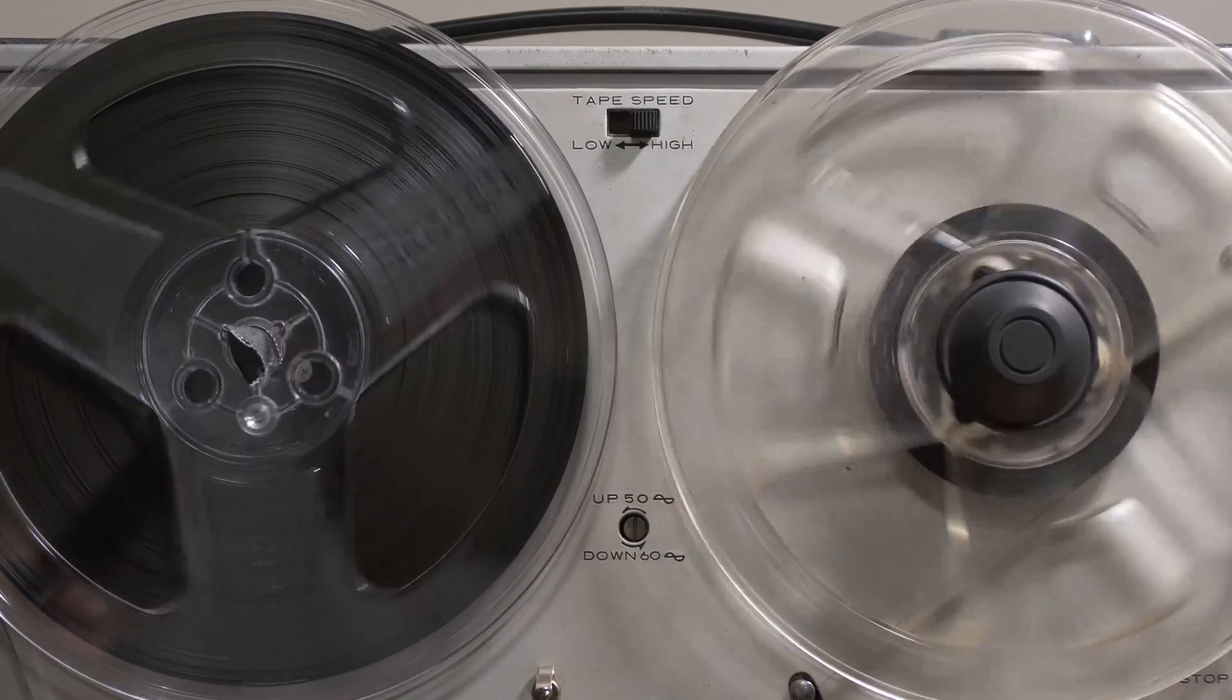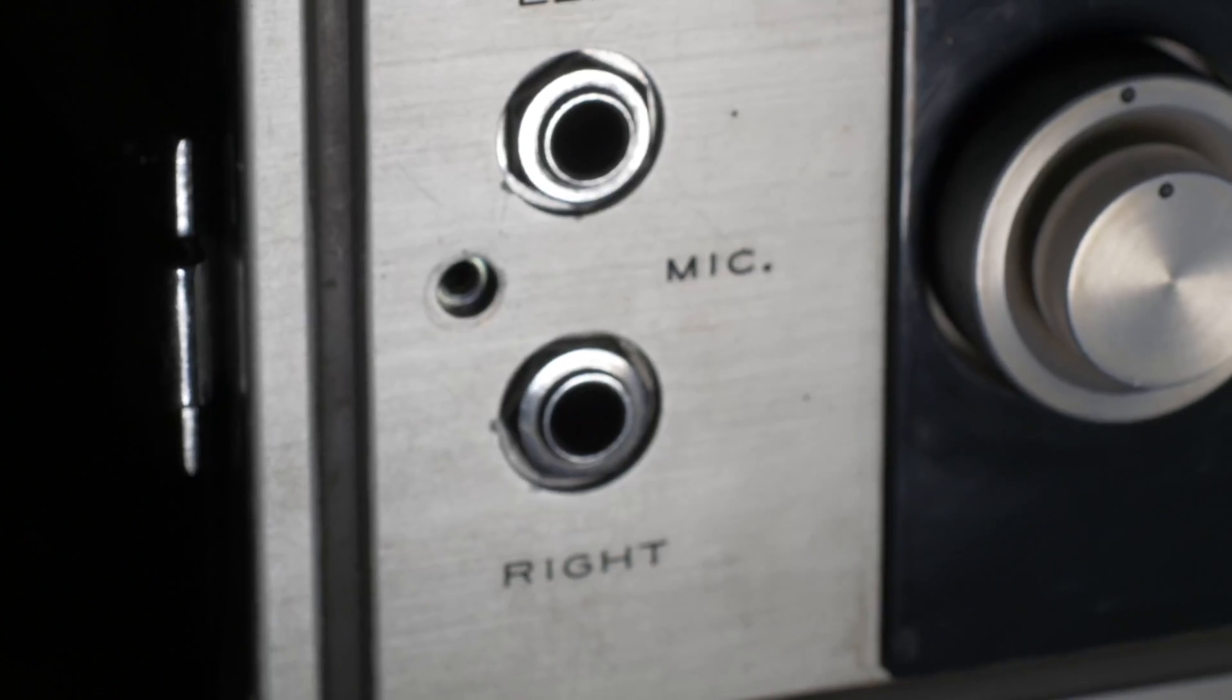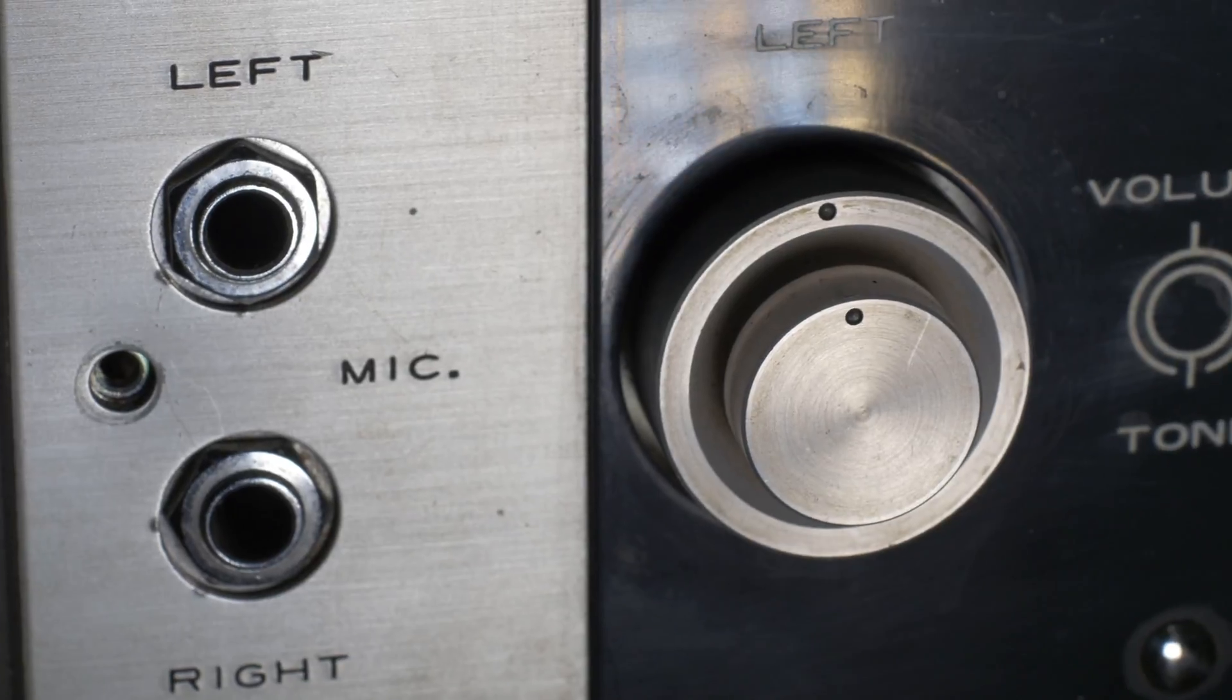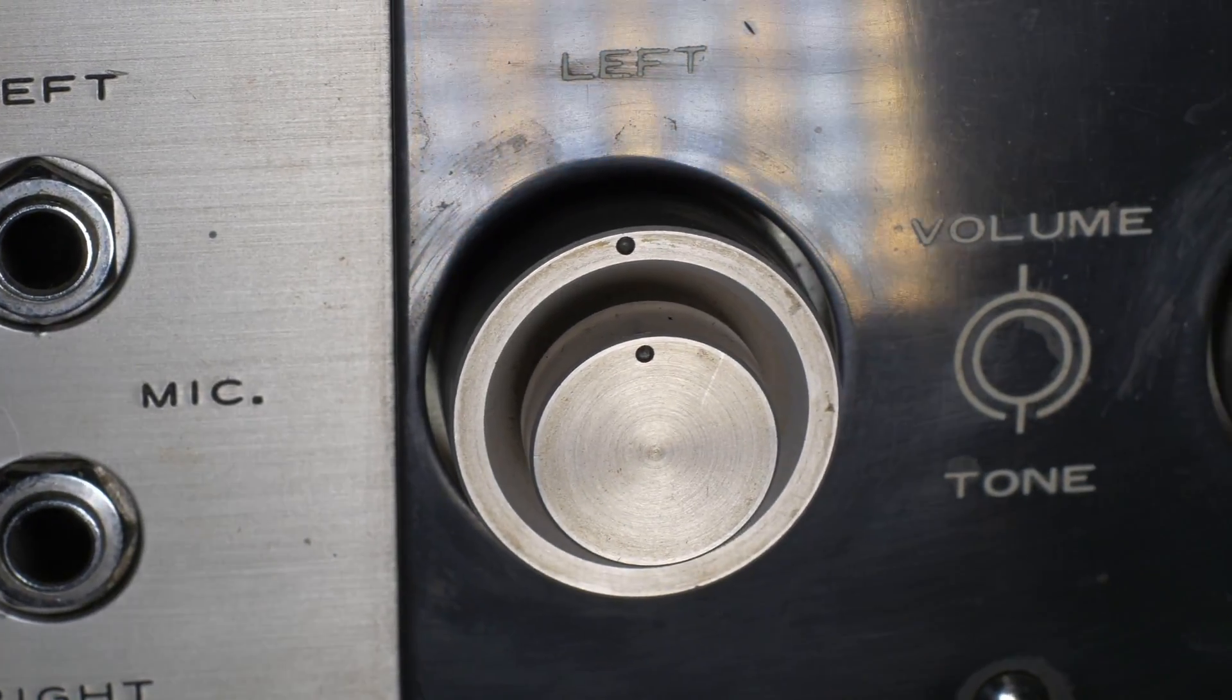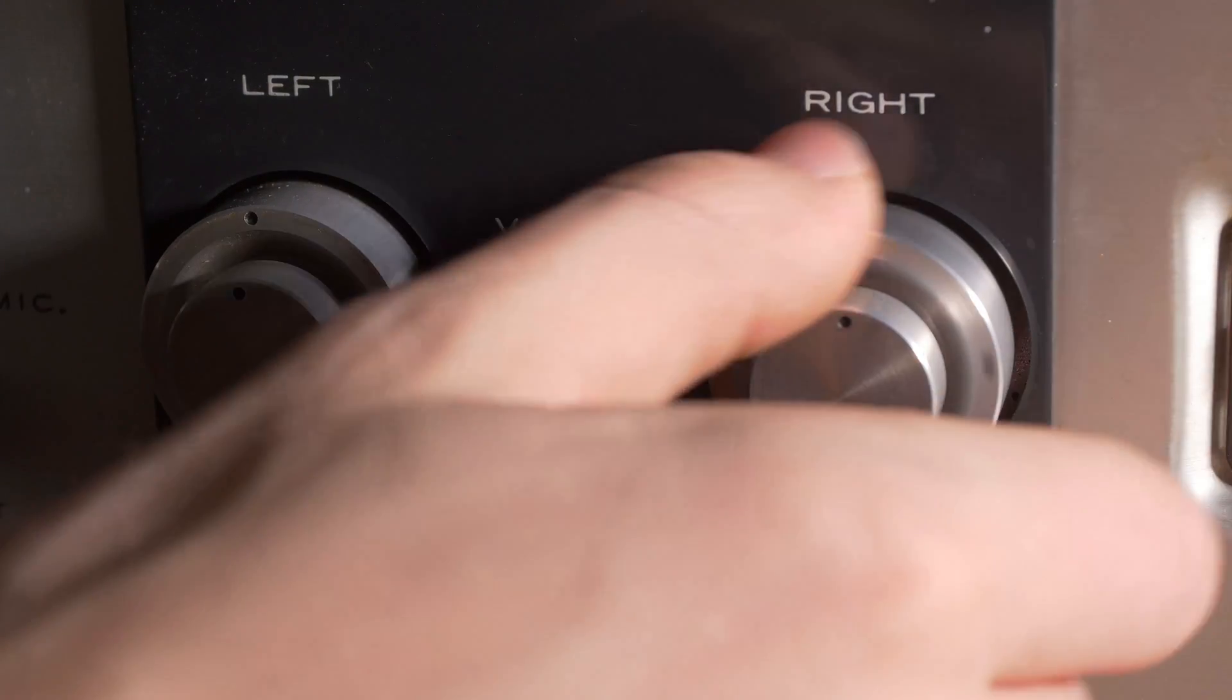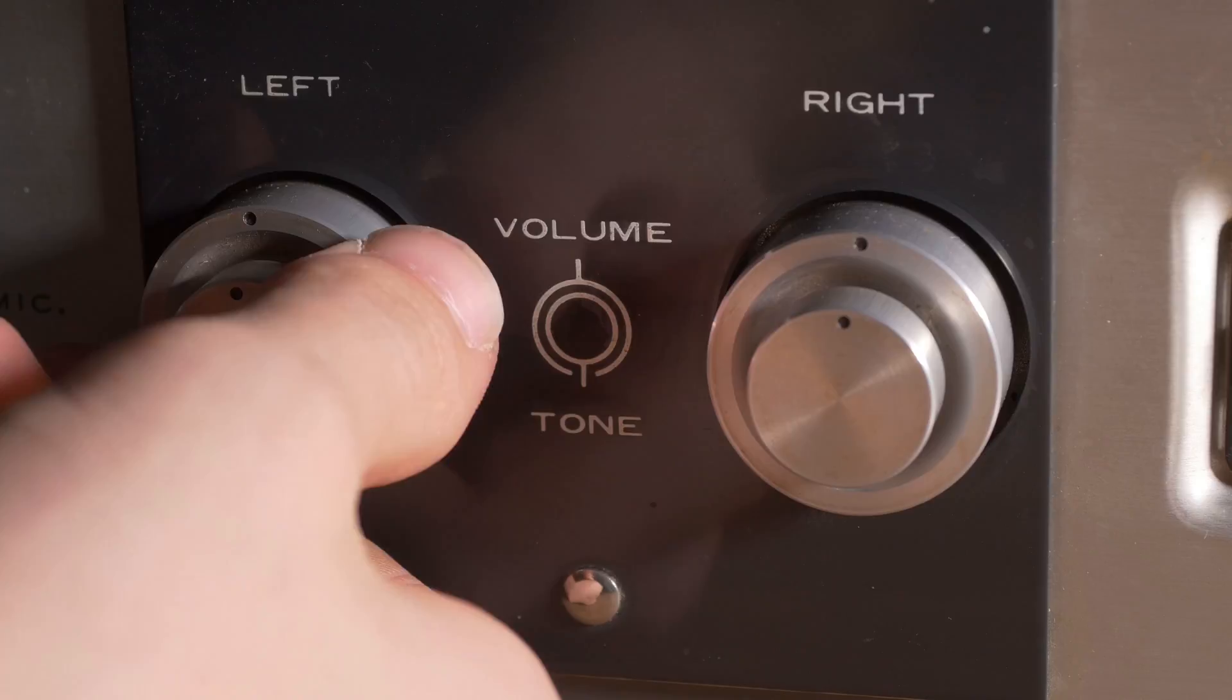However, with a machine of this age, problems are inevitable. When I got the machine, the volume dials would make a loud popping and cracking noise whenever you turned them. This problem was fixed by just rotating the dials back and forth, 20 or so times, to clear out any oxidation inside the potentiometers.